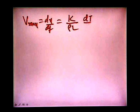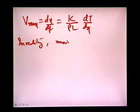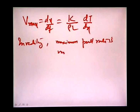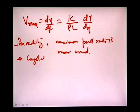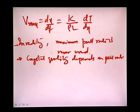V_max = dx/dt = K/(ρL) × (dT/dx). In reality, the maximum pull rate is never used because crystal quality is a very sensitive function of pull rate. Too high a pull rate introduces point defects into the solid material, while too steep a temperature gradient creates large thermal stresses and dislocations, particularly in large-diameter wafers.